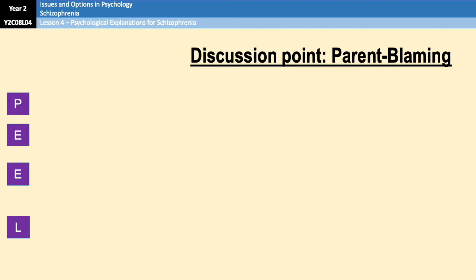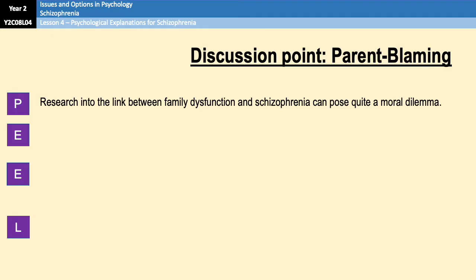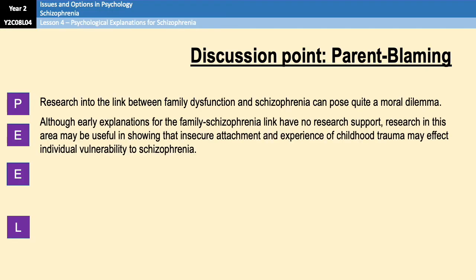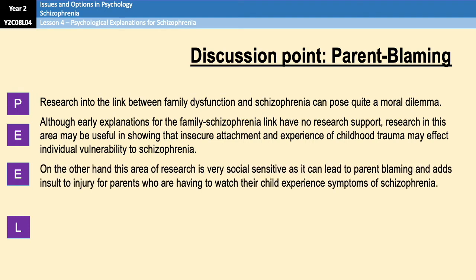This next evaluation point is an interesting discussion point: parent-blaming. The link between family dysfunction and schizophrenia poses a moral dilemma. On the one hand, there's no research support for the traditional theories. However, there is plenty of support showing that insecure attachment and childhood trauma can affect individuals' vulnerability to schizophrenia. That being said, this area of research is very socially sensitive and it can lead to parent-blaming. It almost adds insult to injury for parents who are having to watch their child experience the symptoms of schizophrenia, and it means that psychologists have to weigh up the pros and cons of conducting research like this.